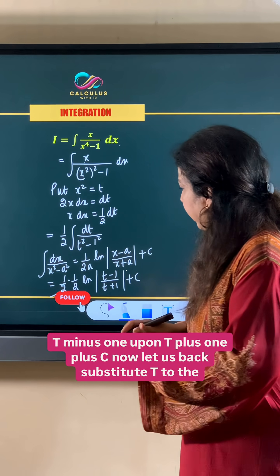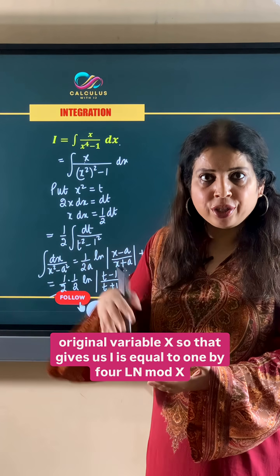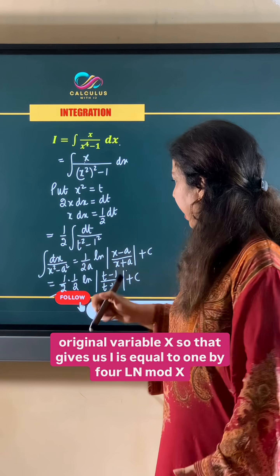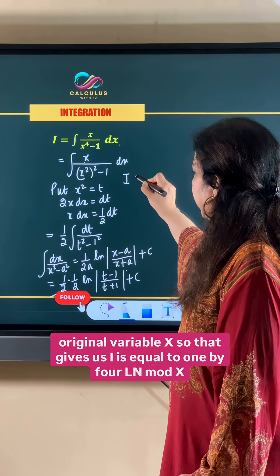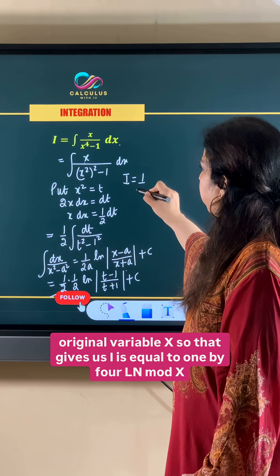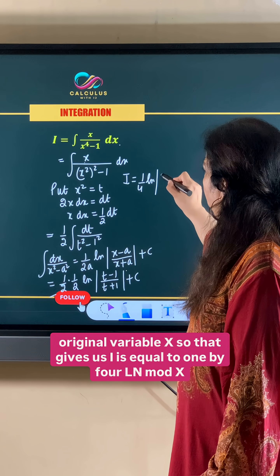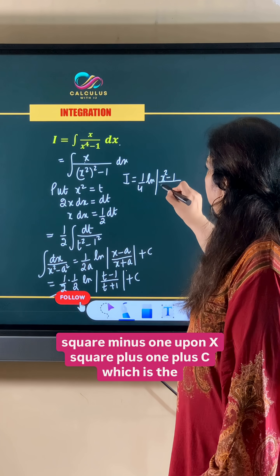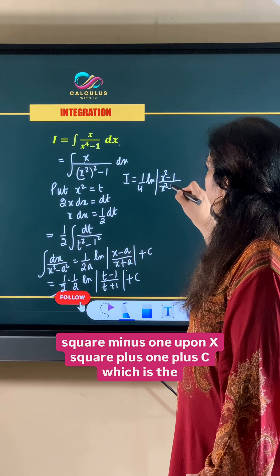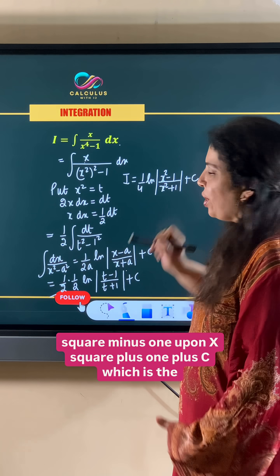Now let us back-substitute t to the original variable x. That gives us i equal to 1 by 4 ln mod of x square minus 1 upon x square plus 1, plus c, which is the final answer.